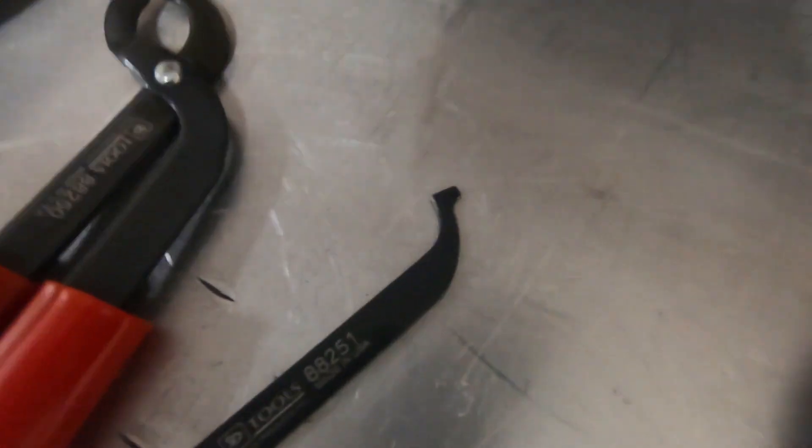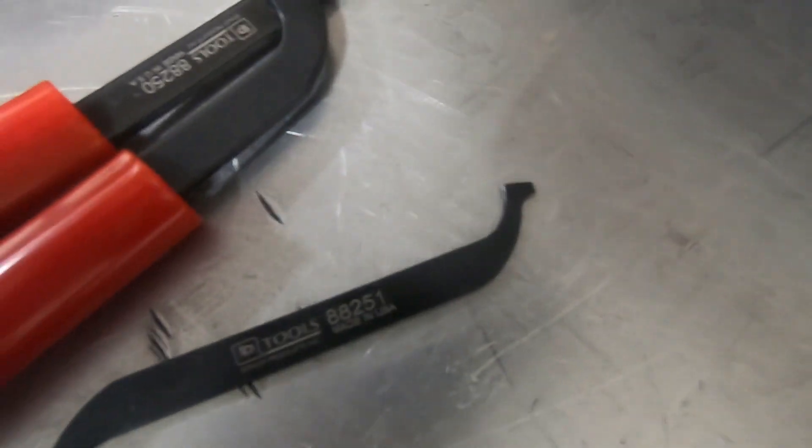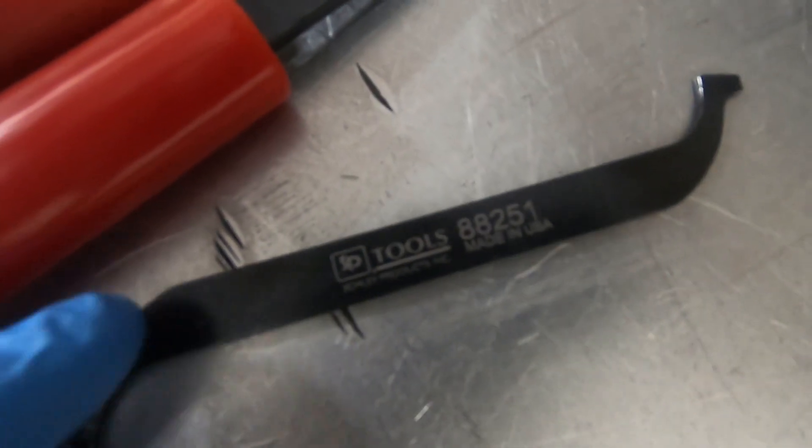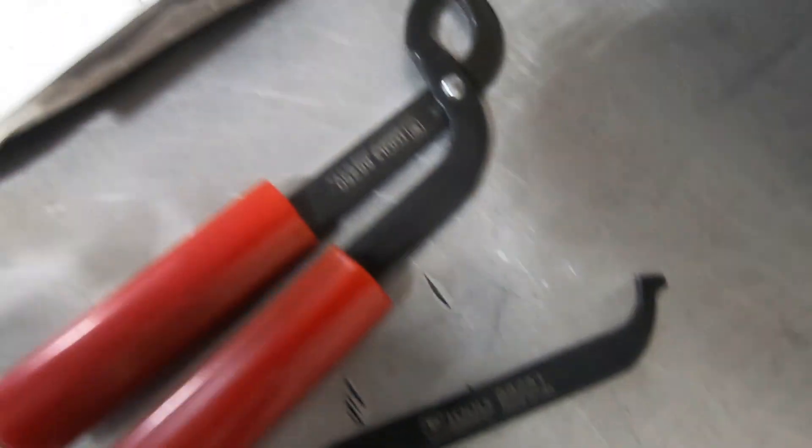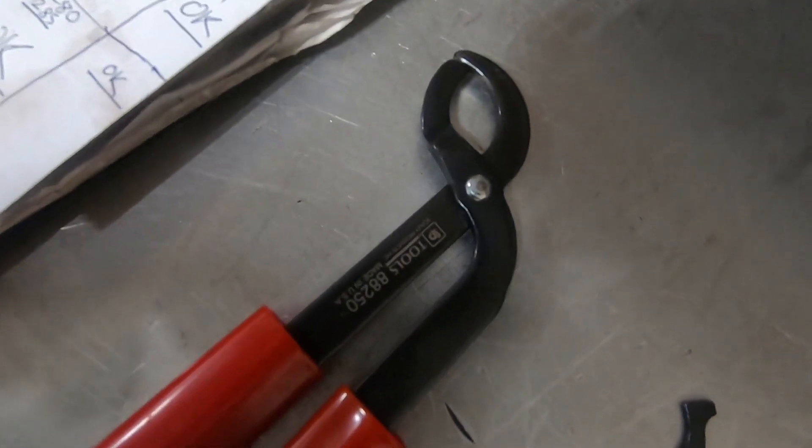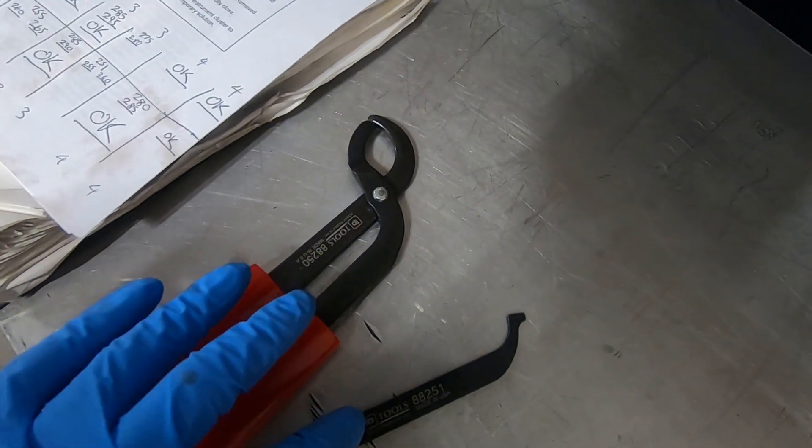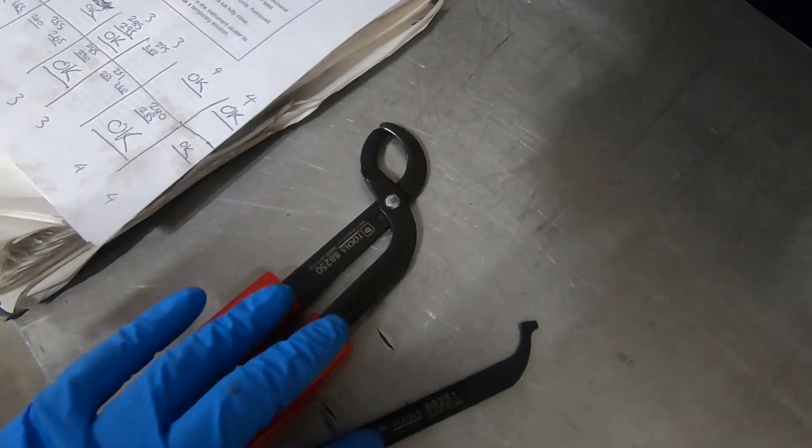You'll need these two guys to do valve adjustment. I think I bought these as a set. Here's the SP Tools part number. This holds the bucket down, and then this guy compresses the bucket. I'll go set up the GoPro and show you guys how we compress the bucket so we can take the shim out and put in a bigger shim.